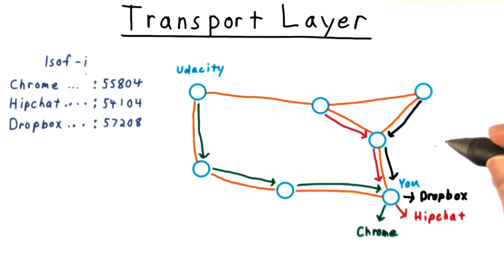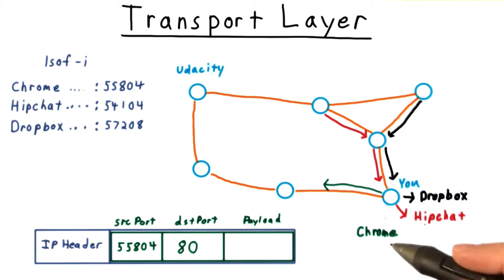In fact, we'll use this as an example. Let's say we're running Chrome and that we visit the Udacity home page. Then Chrome will ask the operating system for a port number that it can use, or it'll pick one that has been allocated already. Let's say the port number is 55804.